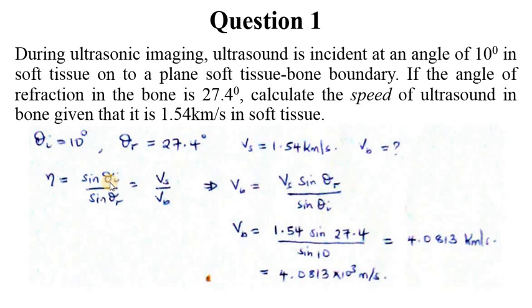This can be rearranged to give us VB equals VS sine theta R over sine theta I. All these values we have, so that simply means we key in 1.54 sine 27.4 over sine 10, which gives us 4.0813 kilometers per second.